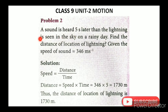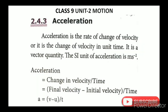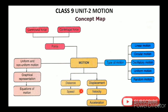Velocity is the rate of change of displacement. It is the displacement per unit time: velocity equals displacement by time. Velocity is a vector quantity, having both magnitude and direction. Displacement is in meters, time is in seconds, so the unit is meter per second, or m·s⁻¹. Summary: distance is scalar, displacement is vector; speed equals distance by time; velocity equals displacement by time and is a vector quantity.